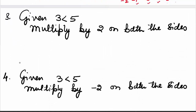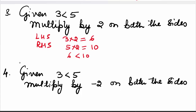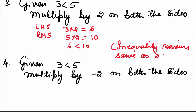Come to the third example. We are given 3 is less than 5. Now multiply by 2 on both the sides. The left-hand side becomes 3 times 2, which is 6. The right-hand side becomes 5 times 2, which is 10. Now 6 is less than 10, so the inequality did not change, as 2 was positive. Inequality remains the same as 2 was positive.